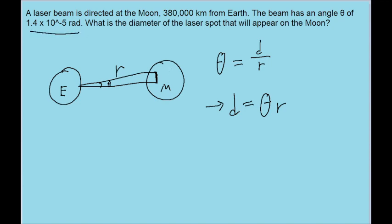And then for r, we're given the r value as 380,000 kilometers, the distance from the moon to the earth.